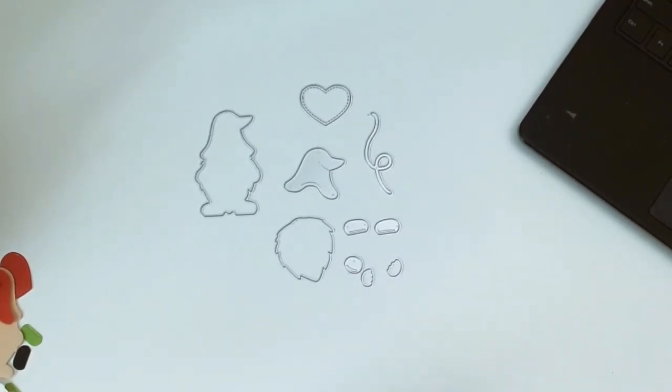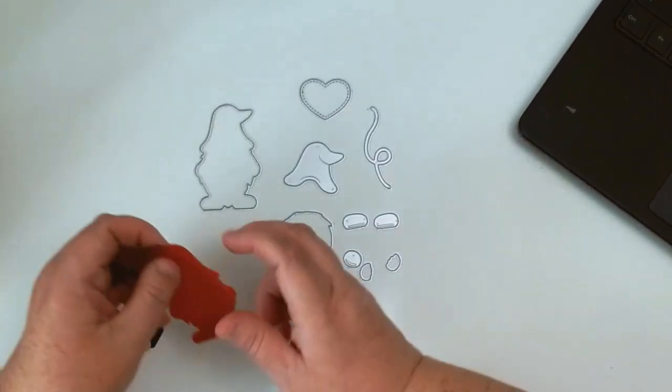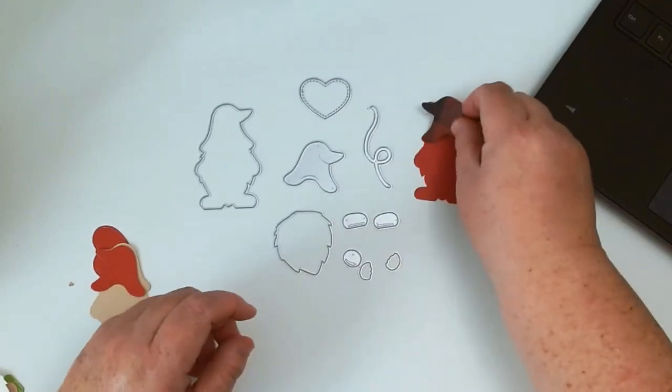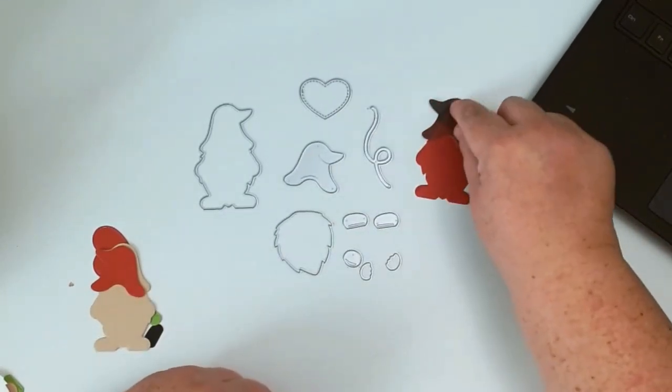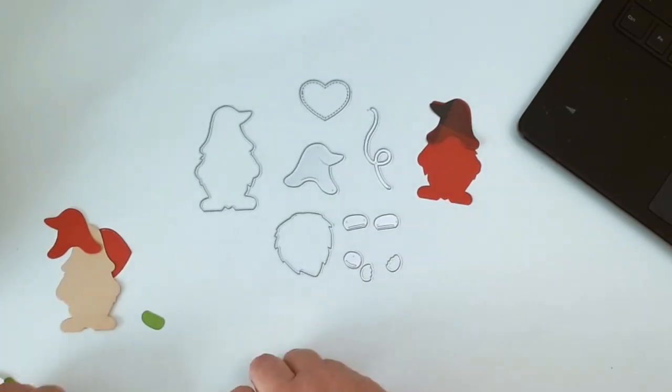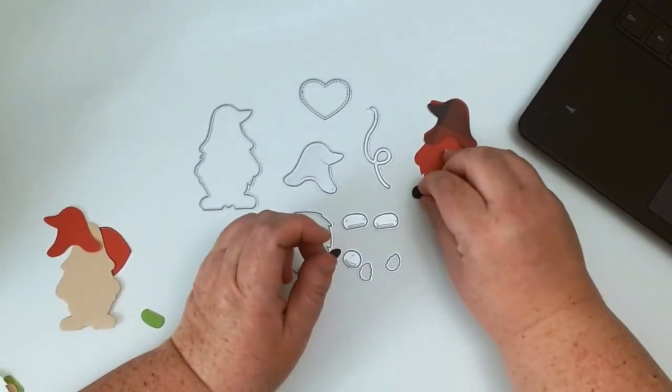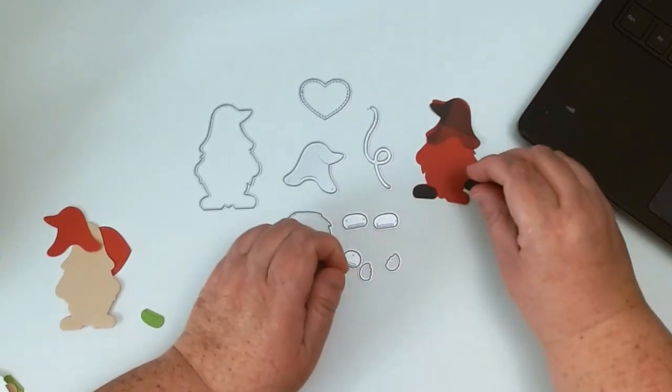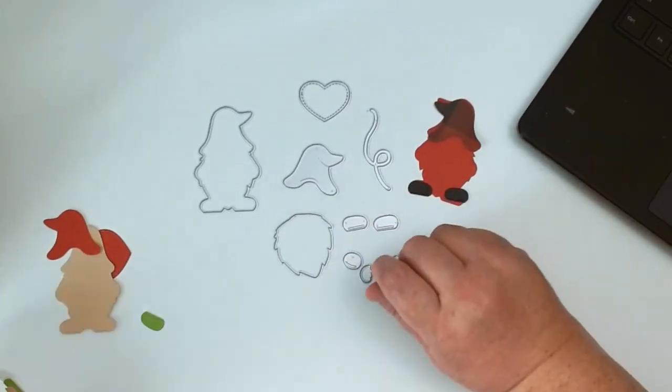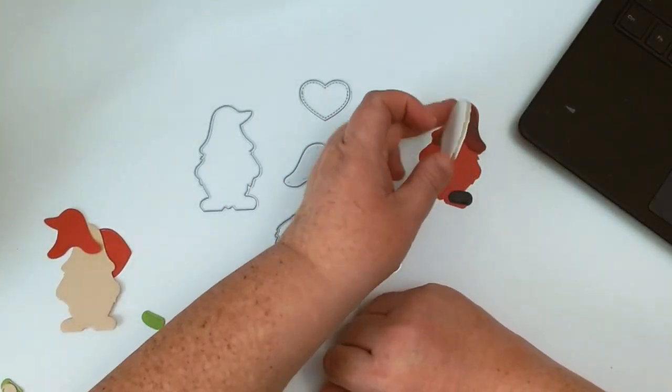I went ahead and thought, why don't I try making a girl gnome and the boy gnome? For the boy, I kind of want to do a camping one. So I have my little red background. We have his hat, his shoes in that black chalk paper that I got from Hobby Lobby. Again, I went ahead and did the beard and doubled it up with foam in the center.